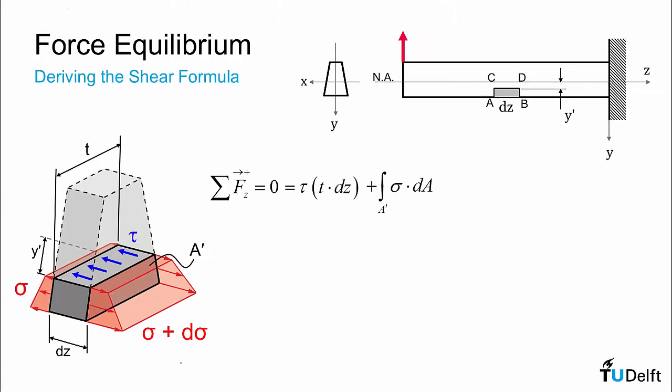To the right we have sigma plus d-sigma, so we subtract the integral of sigma plus d-sigma times dA over the domain A prime.